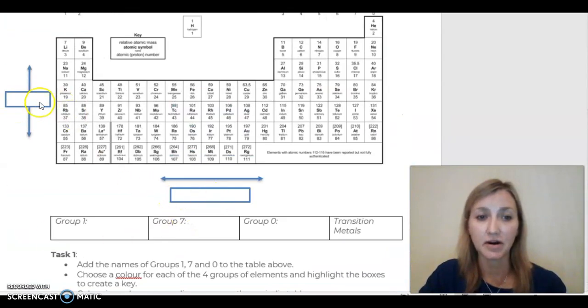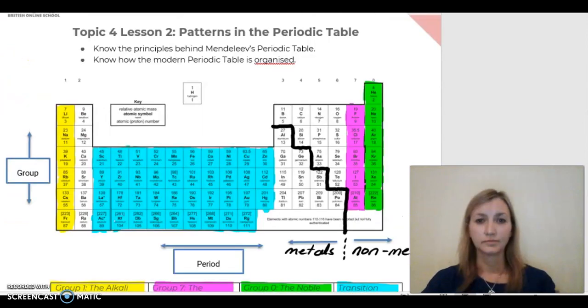So in this box here, write in correctly which one are the groups and which are the periods. We have the horizontal and the vertical.